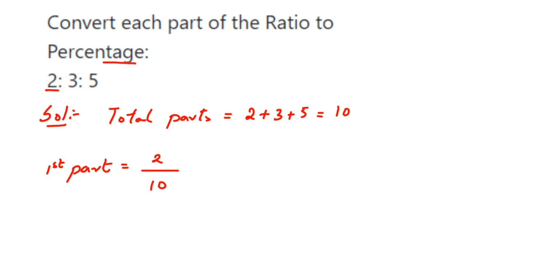Whenever you have to find out the percentage we're going to multiply with 100. So cancel 10 and 100 – 10 ones and 10 tens of 100. So 2 into 10 is 20, so this will become 20 percentage. Similarly the second one...